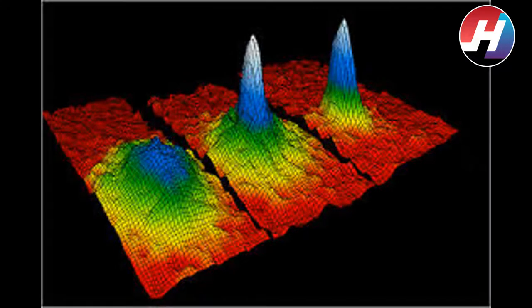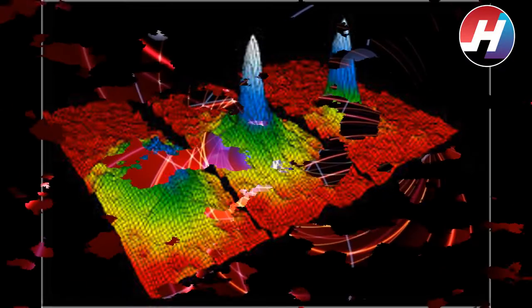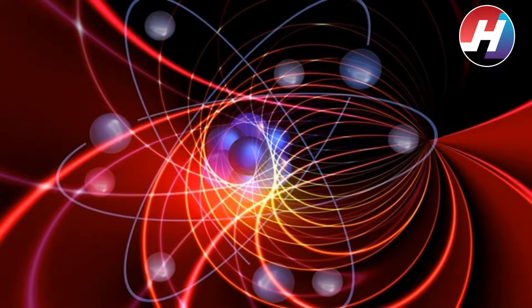This is where the microgravity of low Earth orbit comes into play. If you try to increase the volume on Earth, says Aveline, gravity will just pull the atoms in the center of the BEC cloud down to the bottom of the trap until they spill out, distorting the condensate or ruining it entirely. But in microgravity, the tools in the CAL can hold the atoms together even as the trap's volume increases.